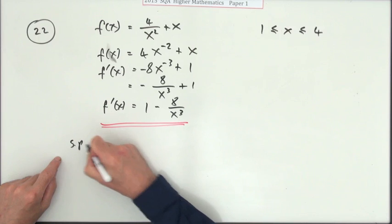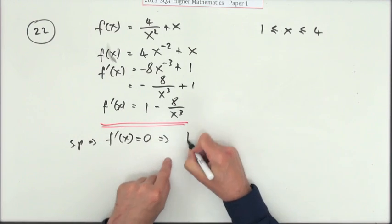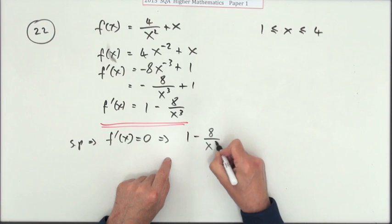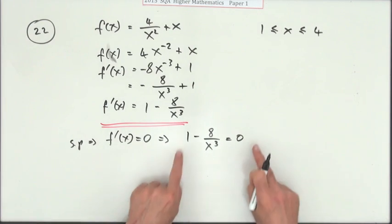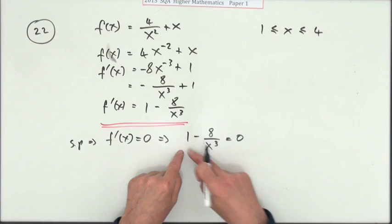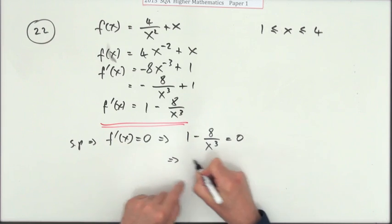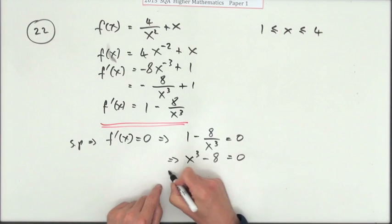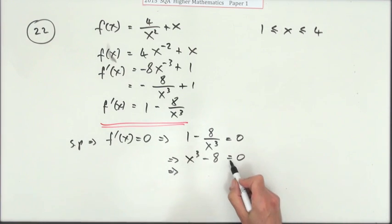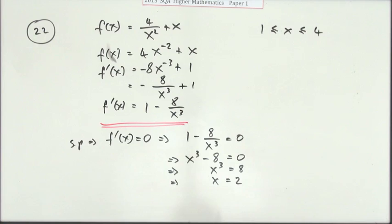Now stationary point, you'll get one if that's ever equal to 0. That means if 1 minus 8 over x cubed is ever equal to 0. Solve that equation - don't want a fraction, you can either think switch that over and multiply by x cubed, or just get rid of fractions by multiplying everything by x cubed. x cubed minus 8 equals 0. Take the 8 over: x cubed equals 8, so x equals the cube root of 8, which is 2.